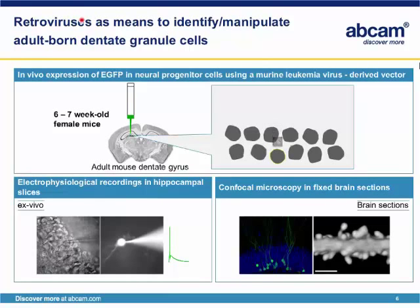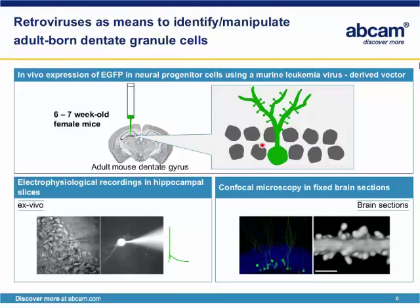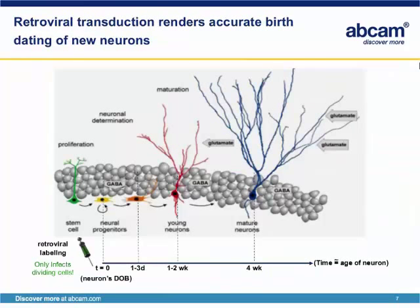Here I briefly discuss one of the methods that we and many other labs in the field have been using, which is the use of retroviruses to identify or manipulate adult-born neurons from dentate granule cells. By injecting retroviruses into the dentate gyrus, the viruses infect dividing cells, and these dividing cells express whatever transgenes we put in the genome of the virus. In this case, we show an example in which GFP is being expressed. One can identify adult-born neurons because they are GFP positive, and these cells can be observed in confocal microscopy in fixed brain sections, and also used for electrophysiological recordings in hippocampal slices.